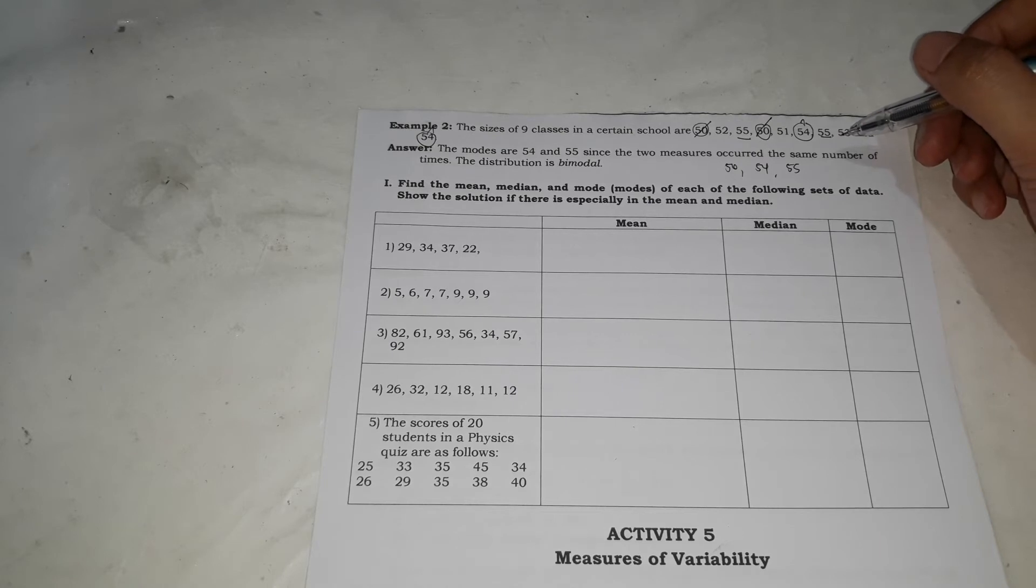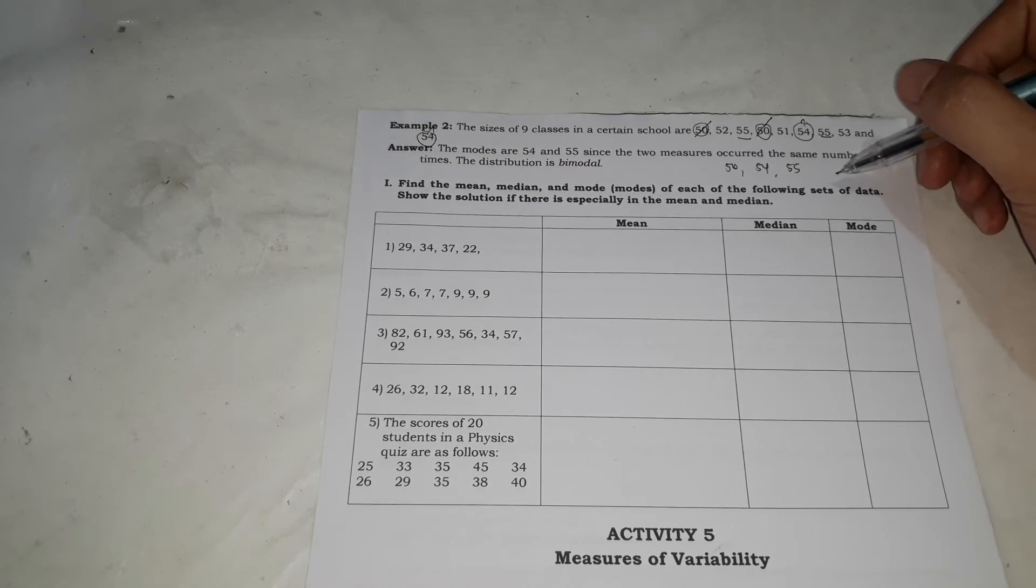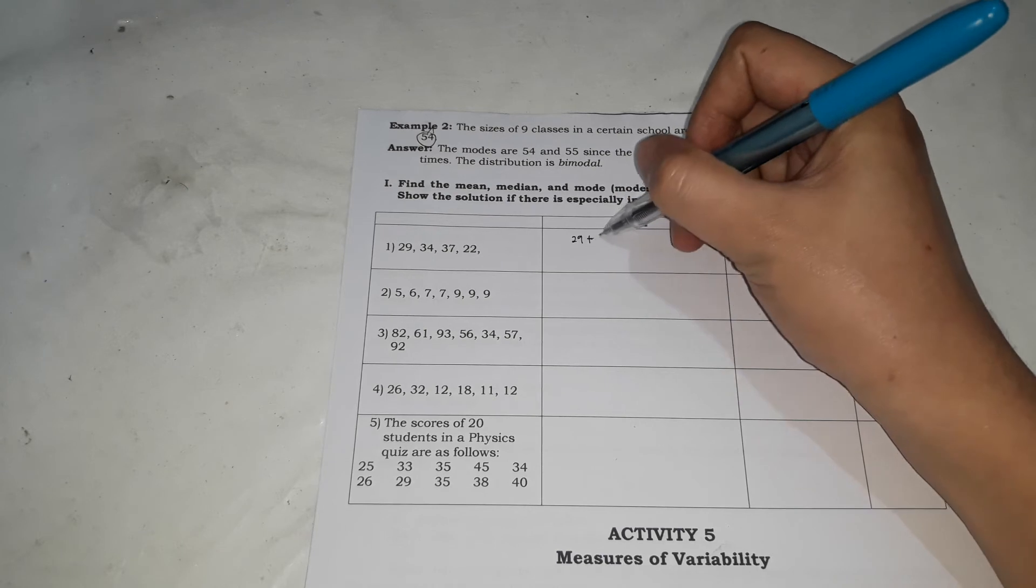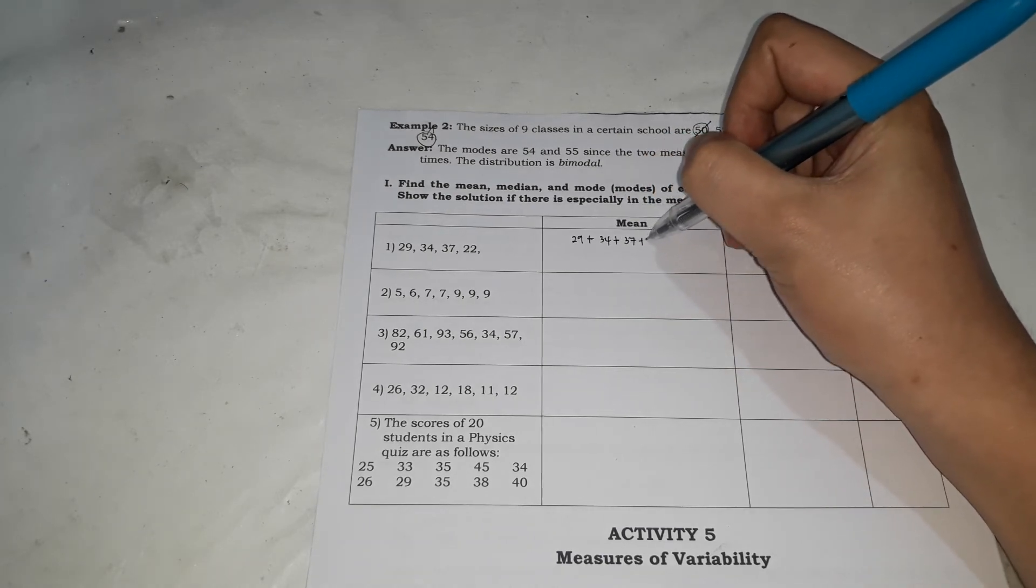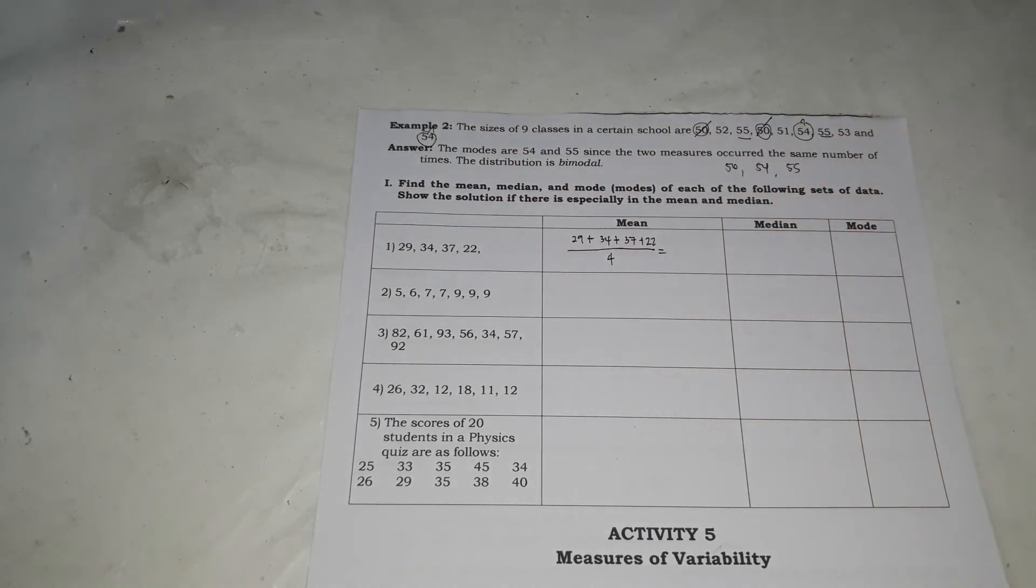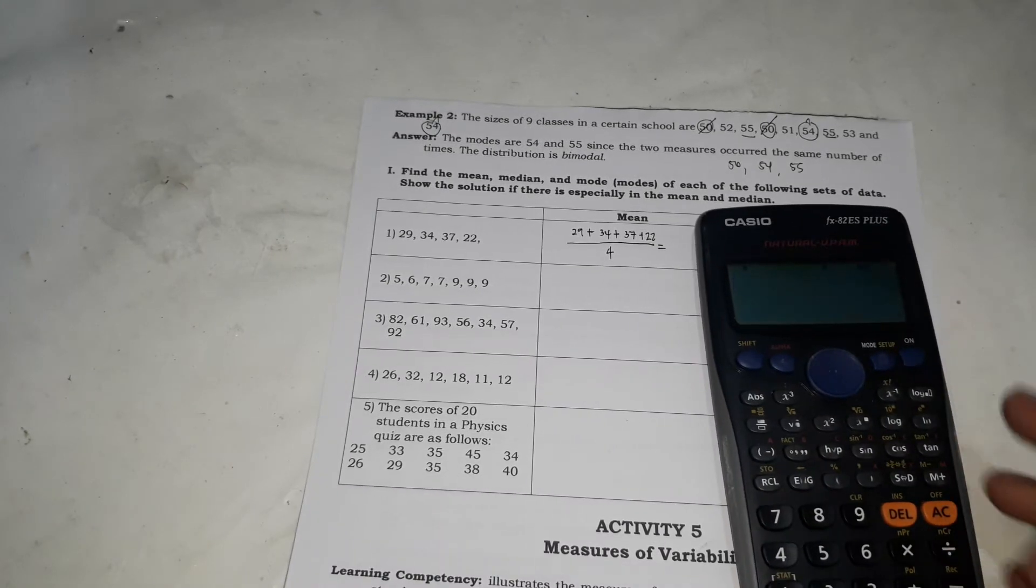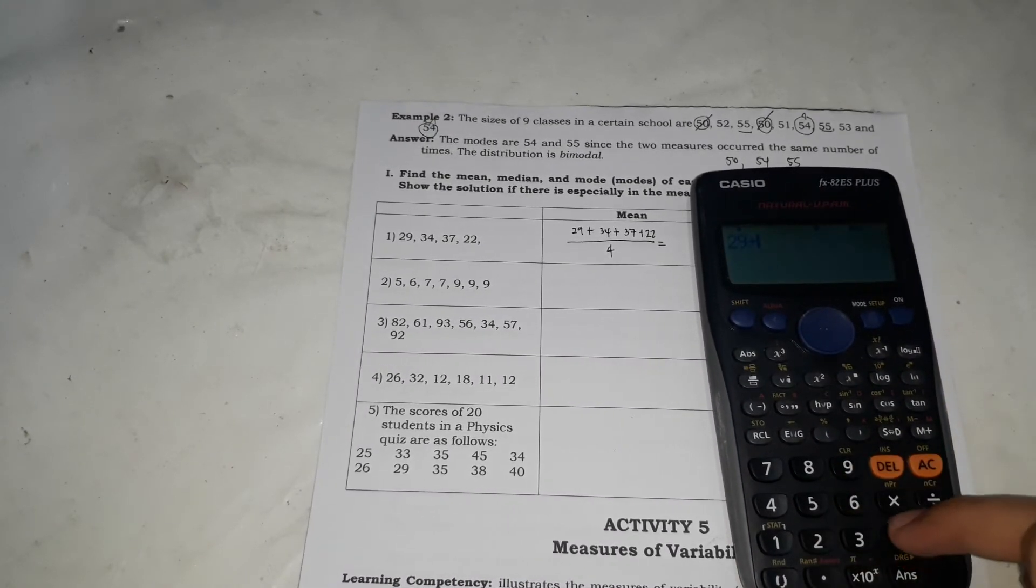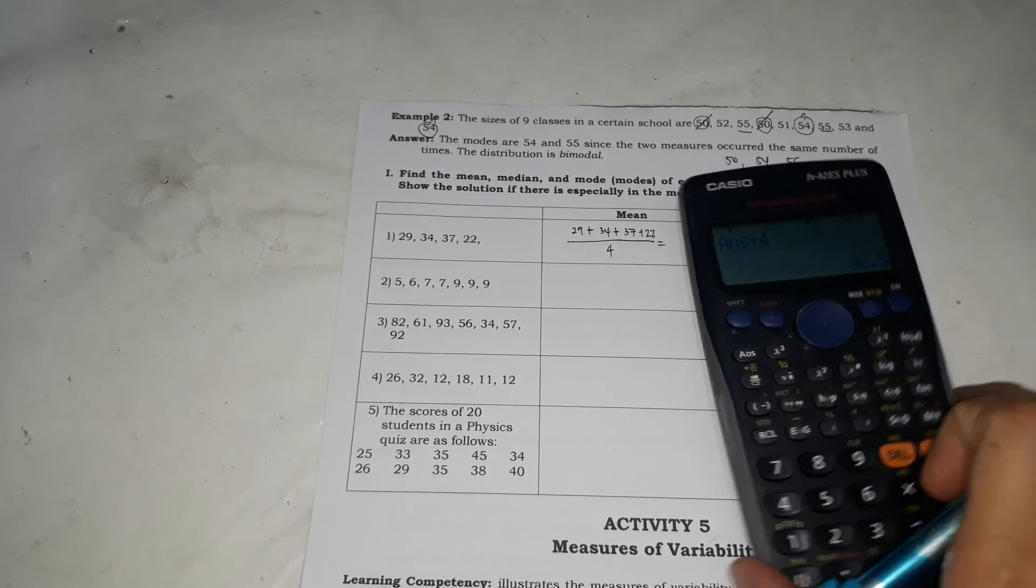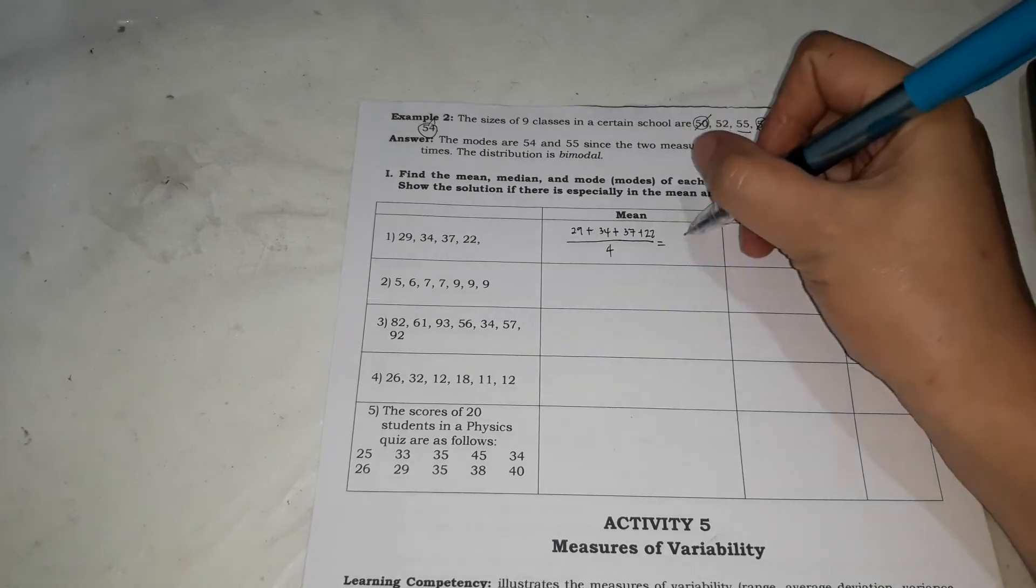So to answer, this is activity. Find the mean, median, and mode of each of the following sets of data. Show the solution if there is, especially in the mean and median. So for number one, to get the mean, all you have to do is plus. Tapos divide mo kung ilan sila. 1, 2, 3, 4. So divide mo by 4. So we're going to use a calculator so that it would be easy. 29 plus 34 plus 37 plus 22 divided by 4. That's 30.5. So the mean is 30.5.